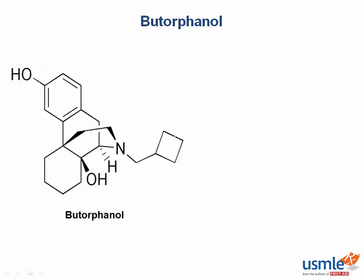Butorphanol's trade name is Stadol. It's important not so much for what it is used for, but rather to illustrate the concept of partial agonists. Butorphanol is a partial agonist at the mu receptor, and it has a lower efficacy at the mu receptor than full agonists.